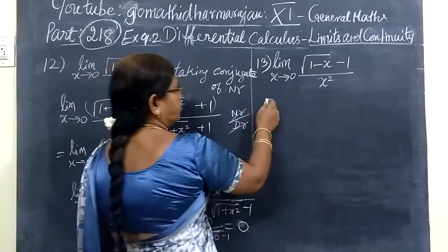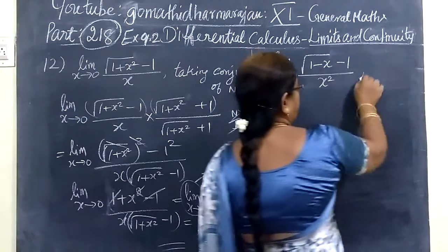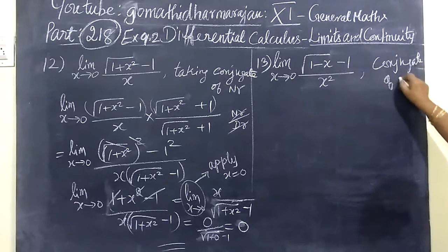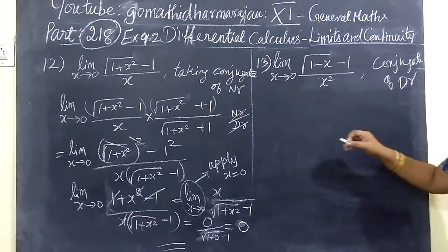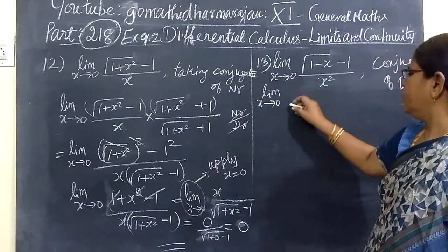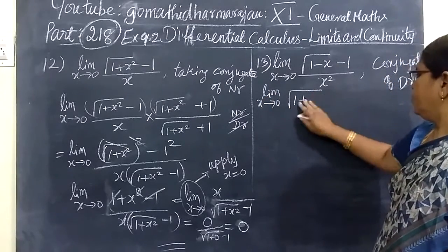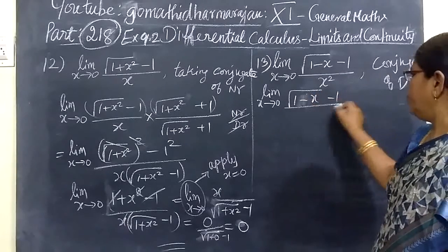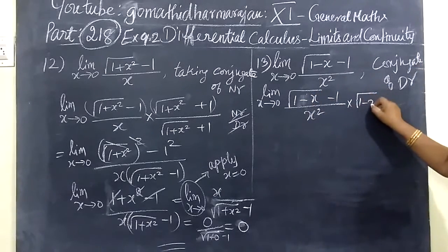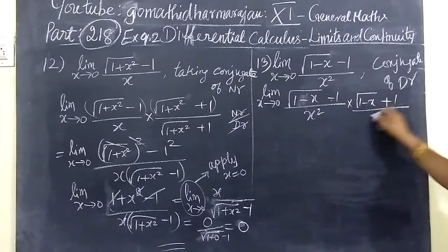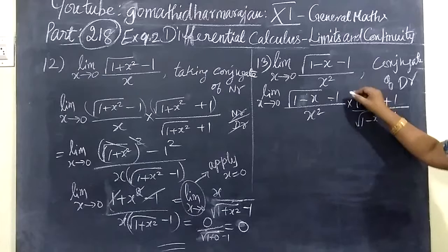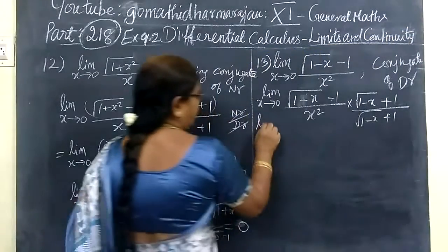And come to the 13th question. Here also we are taking what? Conjugate. Conjugate of denominator. Denominator, not the conjugate form. So that you are writing: limit x tends to 0, root of 1 minus x minus 1 by x squared, into root of 1 minus x. It is a minus 1 in the iron. Plus 1 up in the iron. So root of 1 minus x plus 1. And this is chapter 1, I have calculated.